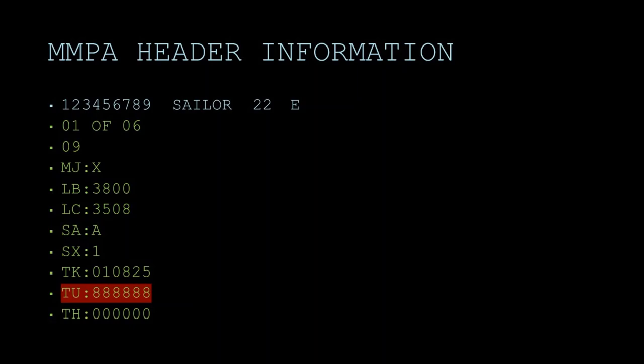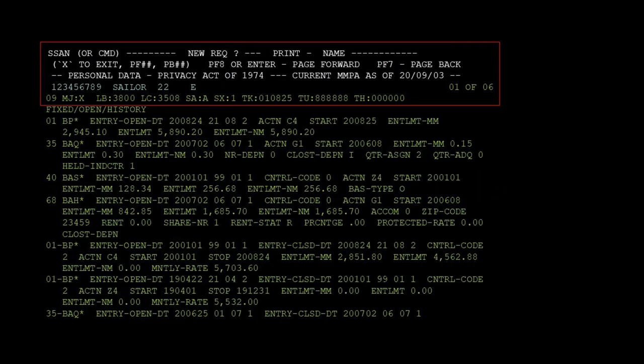Based on that information, this is an officer. TH is the expiring term of service for enlisted personnel — the date the current enlistment expires and should match the soft EOS date of the LOPS. This one says 0000, confirming this is an officer. If this were enlisted, it would say something like 210414. That concludes the MMPA header information.